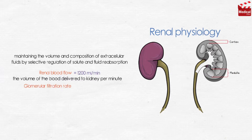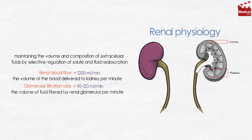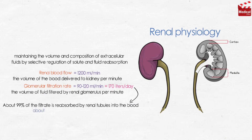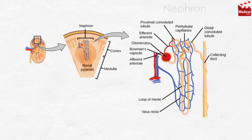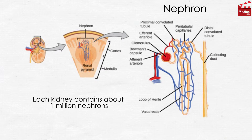Glomerular filtration rate — the volume of fluid filtered by the renal glomerulus per minute — equals 90 to 120 milliliters per minute, which equals 170 liters per day. About 99% of the filtrate is reabsorbed by renal tubules into the blood, so about 1.5 liters per day from the filtered 170 liters per day is excreted as urine. The functional unit of excretion in the kidneys is the nephron; each kidney contains about 1,000,000 nephrons.